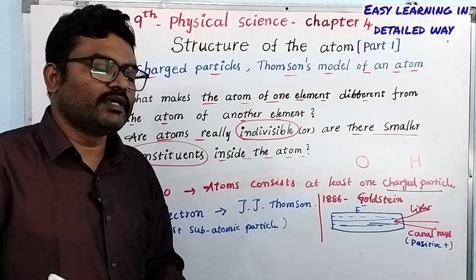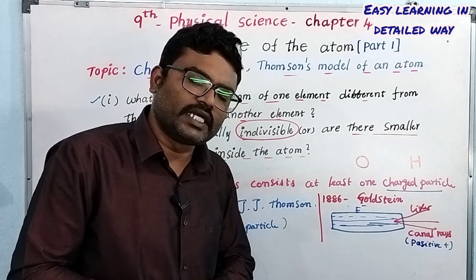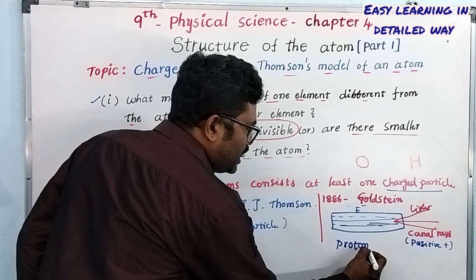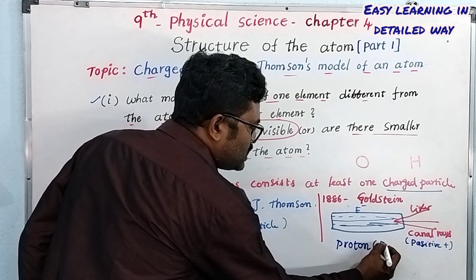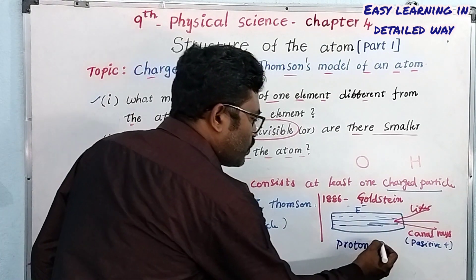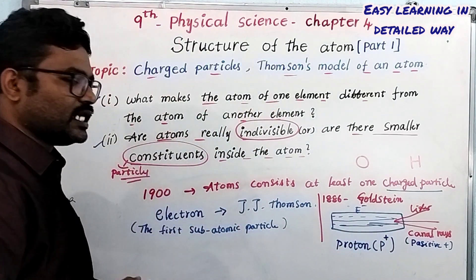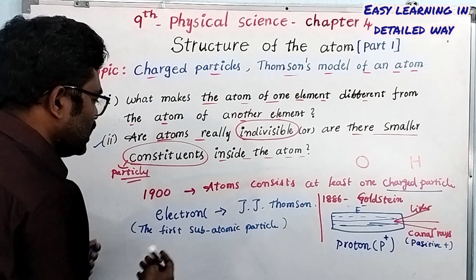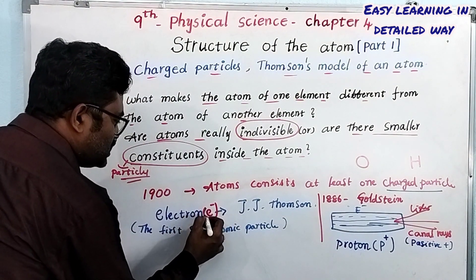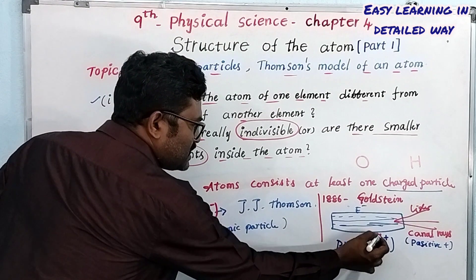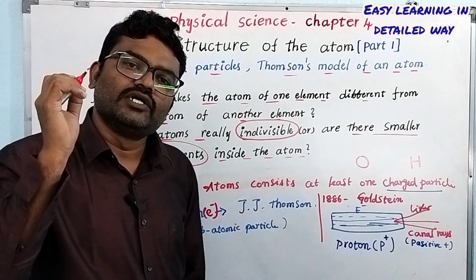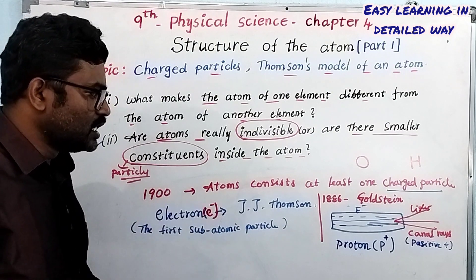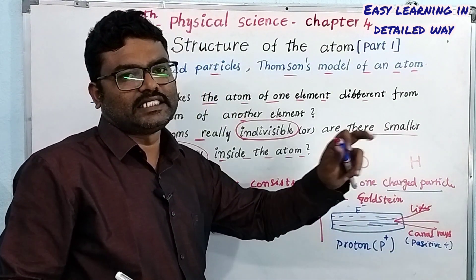So these positively charged particles were named protons. Protons carry a positive charge, represented as plus. Electrons carry a negative charge, represented as minus. The charge of the electron is negative and the charge of the proton is positive.